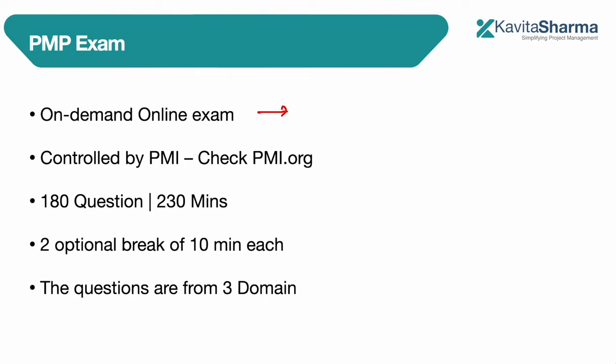The questions in the PMP exam are typically objective questions — you don't have to write answers. There are 180 questions which you have to attempt in 230 minutes. I'll talk about the question types shortly.